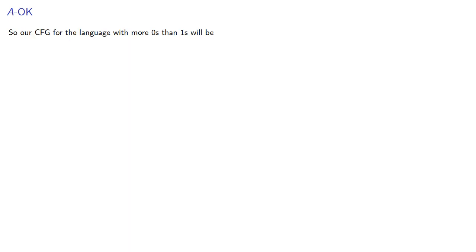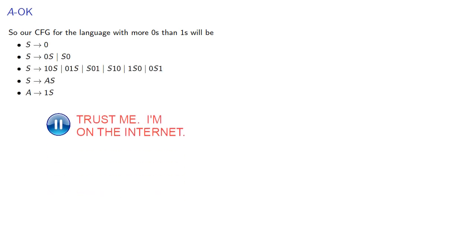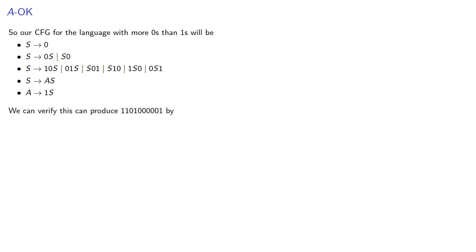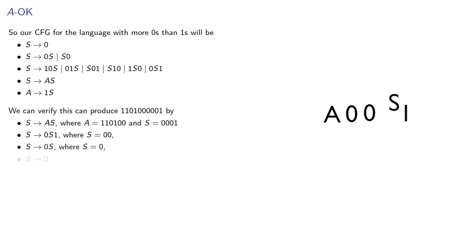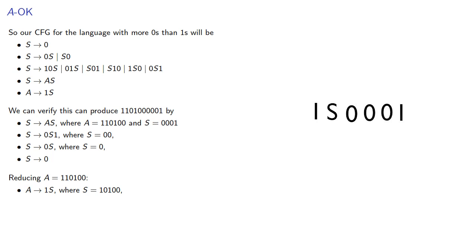So the context-free grammar for our language with more 0s than 1s will include these rules. We can verify this by producing a string. Since we have a new variable, we'll track things separately. We start with S producing A S, where A is the first part of the string with as many 1s as 0s, and S is the remaining part which must be in the language. If we try to deconstruct S — S begins with a 0 and ends with a 1 — we could use the rule S produces 0S1, then S produces 0S, and S produces 0. We reduce A using A produces 1 followed by a string of the language, and then S is further decomposed.